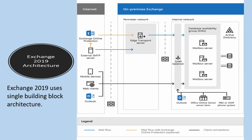An important point is Exchange 2019 uses a single building block architecture. Let's have a look at this diagram first. It has three mailbox servers and a DAG. The AD site contains a writable DC which is also a global catalog server.